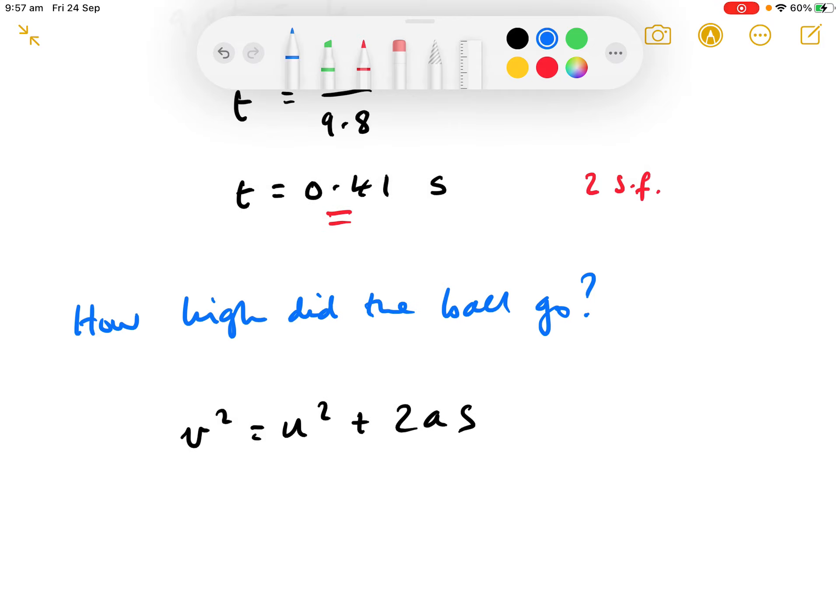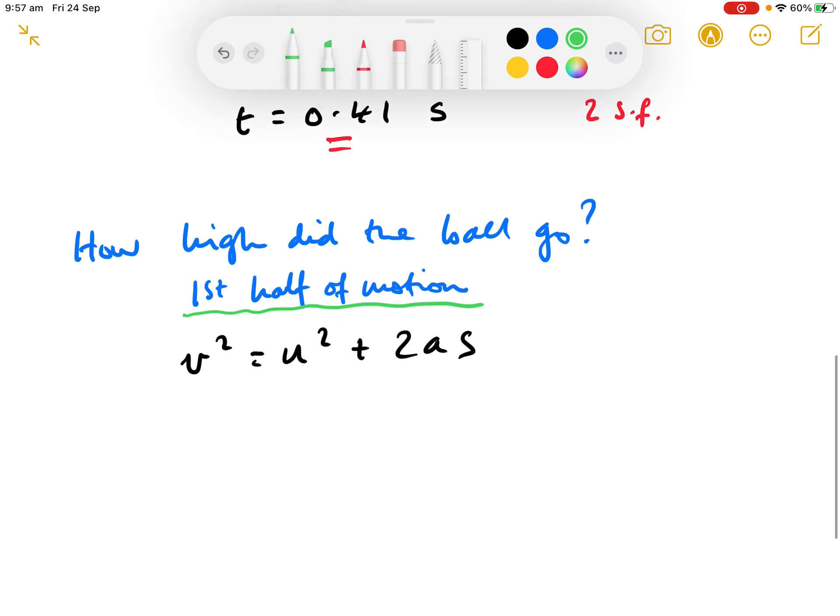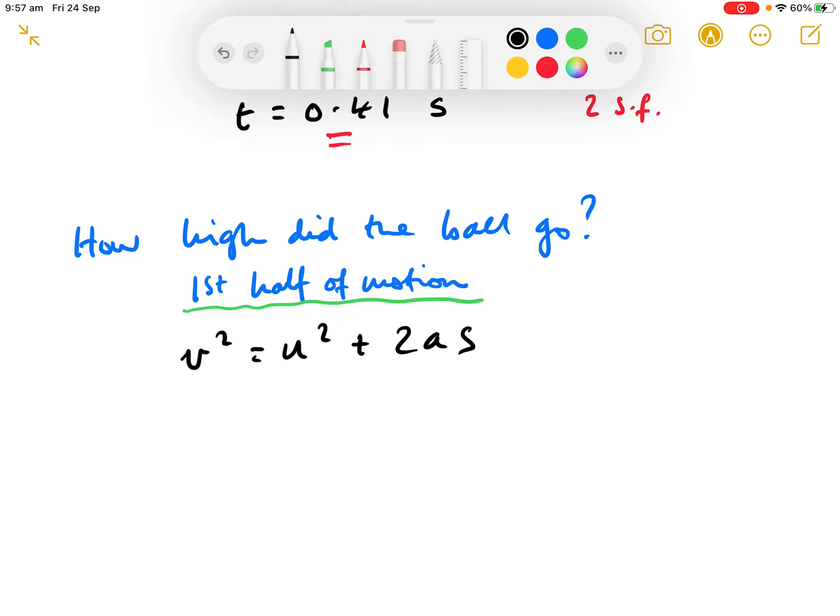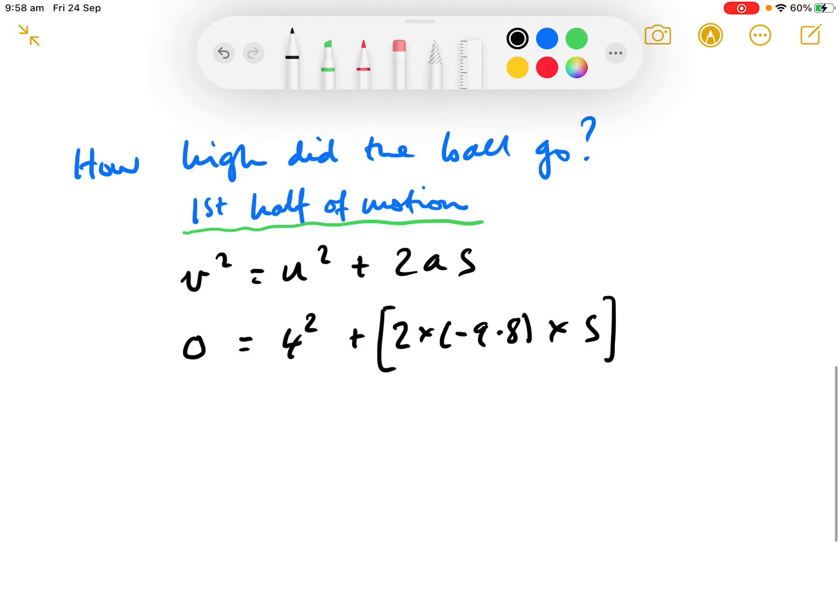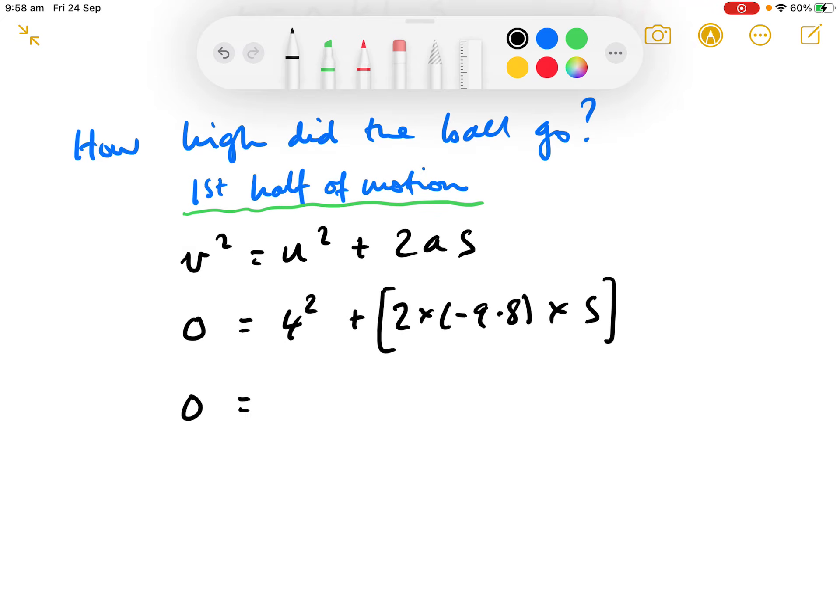And again, I'm just going to specify the first half of motion. Right. Well, v is 0. That is 4. 2 into minus 9.8. Sign conventions to apply. Times s. I think it's a good idea to put all of that in square brackets and put the minus 9.8 in round brackets. Let's just tidy that up a bit before 4 to 16.